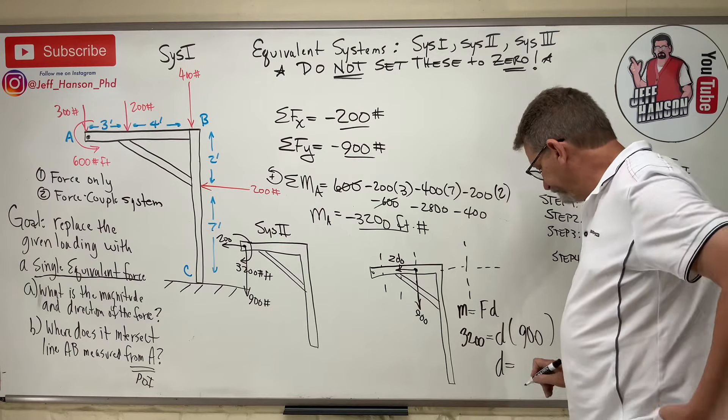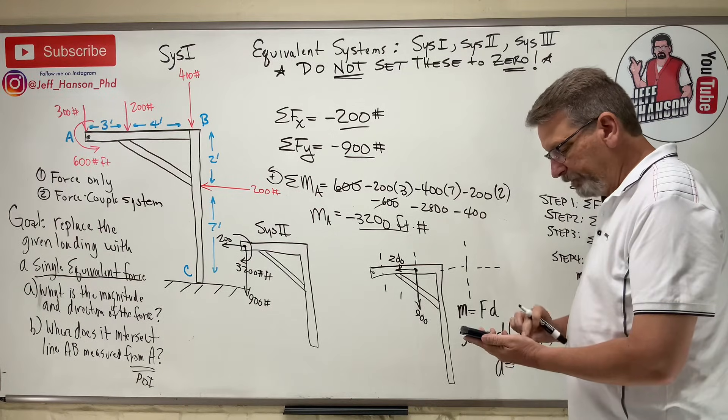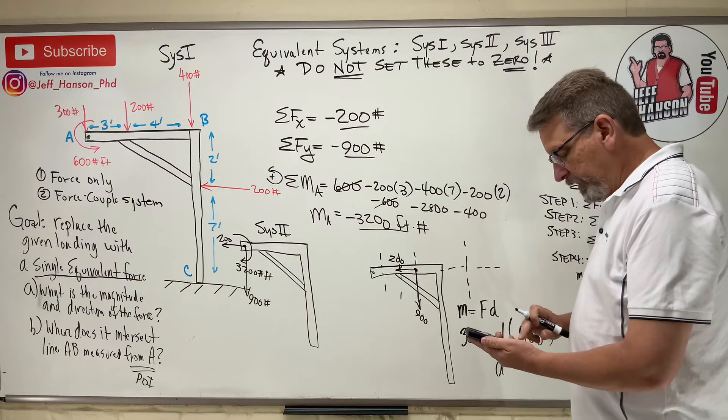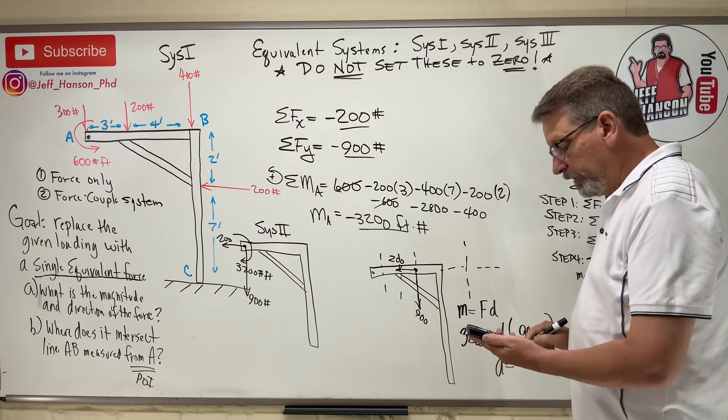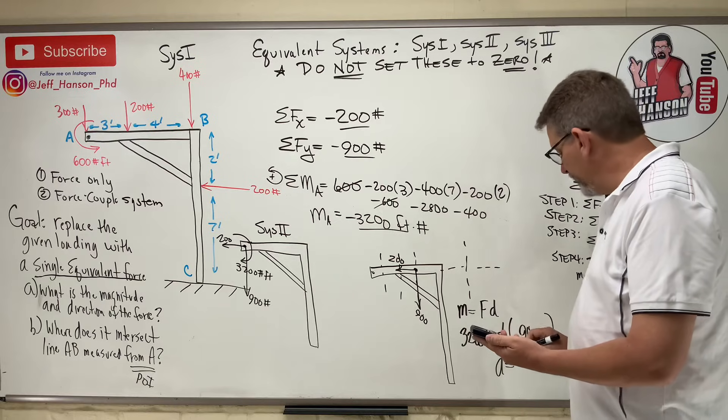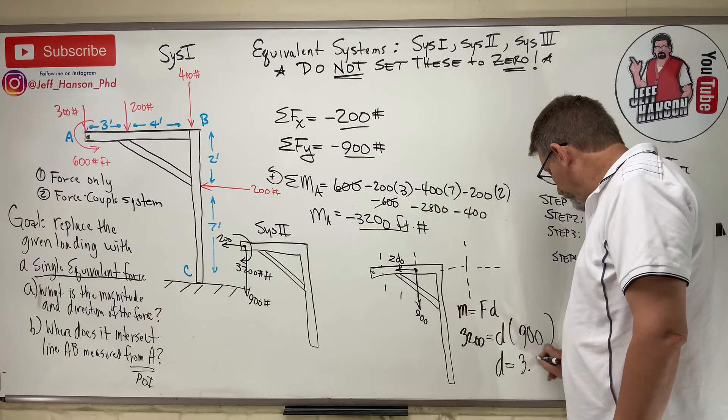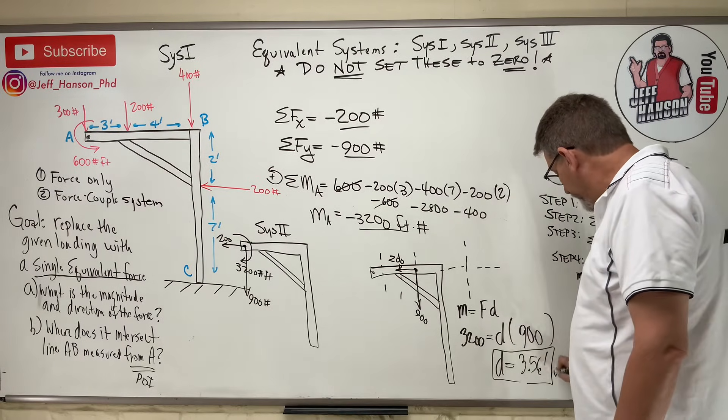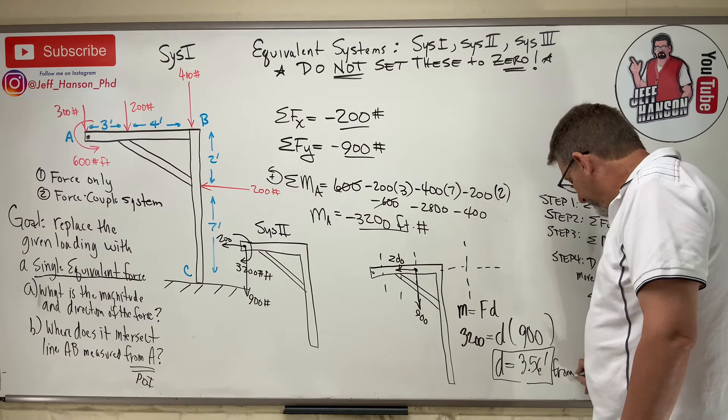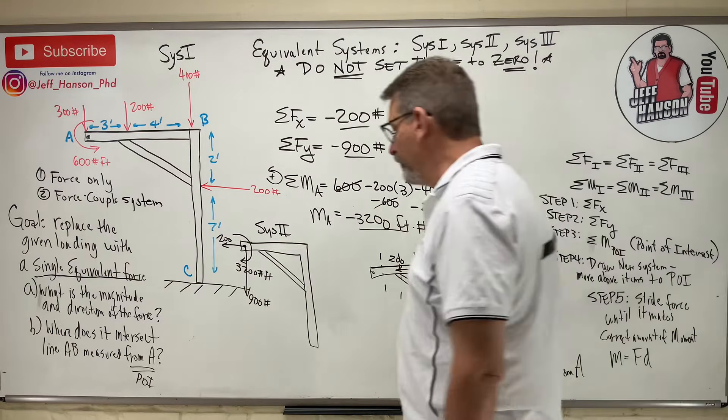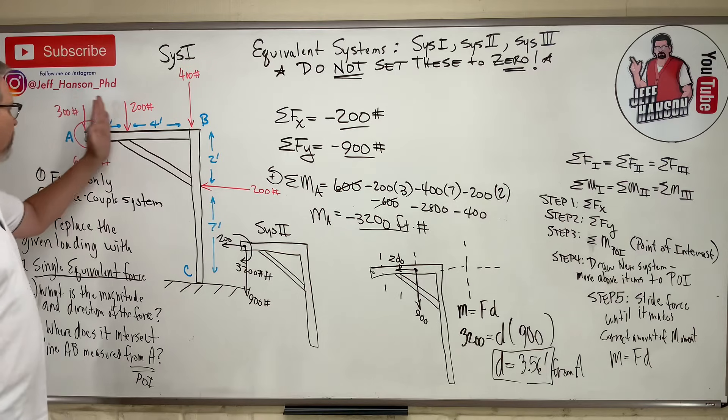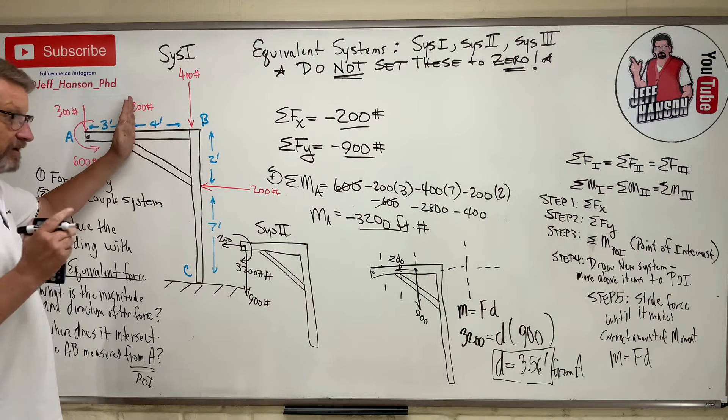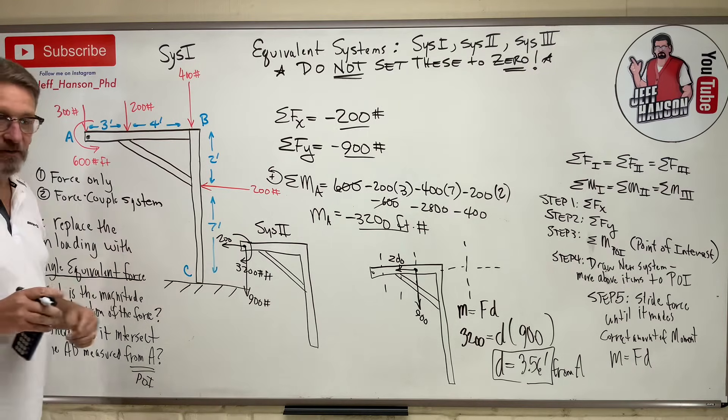How much moment does the 200 make about this point here? None. The 900 is doing all the work. So, D is equal to 3,200 divided by 900. 3.55, or 3.56 feet. So, that's how far from A. So, 3.56 feet from A, if I move it over to there, that line of action, it will make that amount of moment.